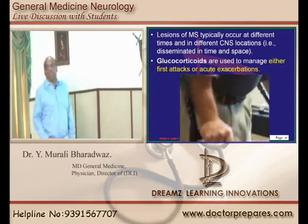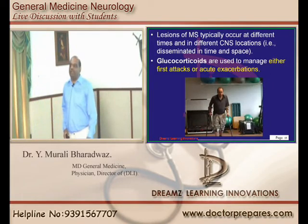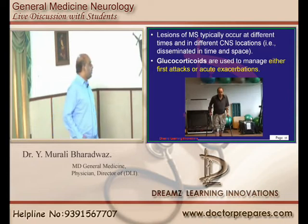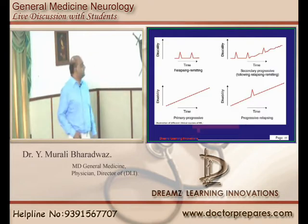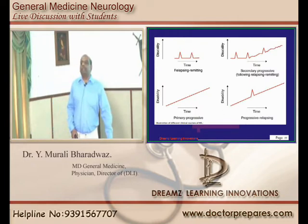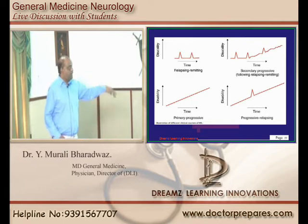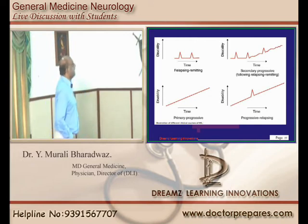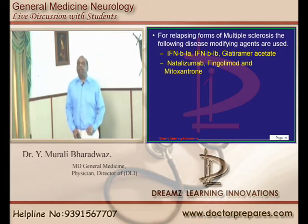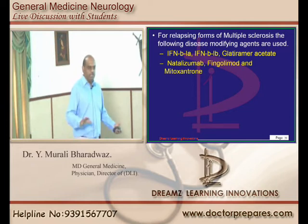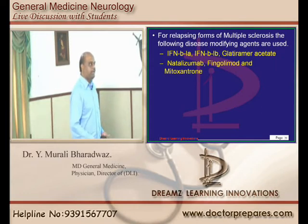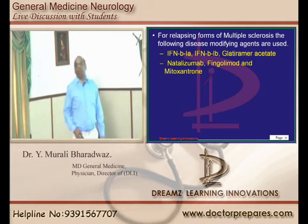Glucocorticoids are used to manage the first attack or acute exacerbations of multiple sclerosis. The clinical course can be relapsing-remitting, relapsing-remitting with secondary progression, primarily progressive, or progressive-relapsing. Whenever there is a relapsing form of multiple sclerosis and the patient presents acutely, after steroids resolve it and a flare-up occurs again, we need to consider disease-modifying drugs.